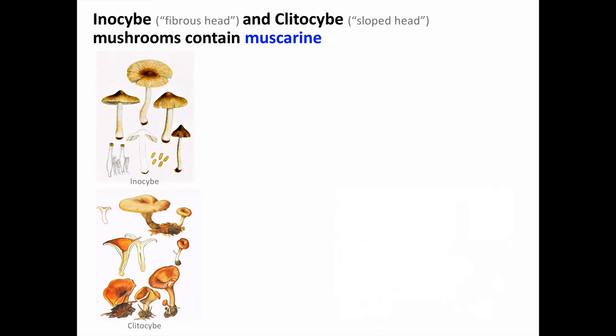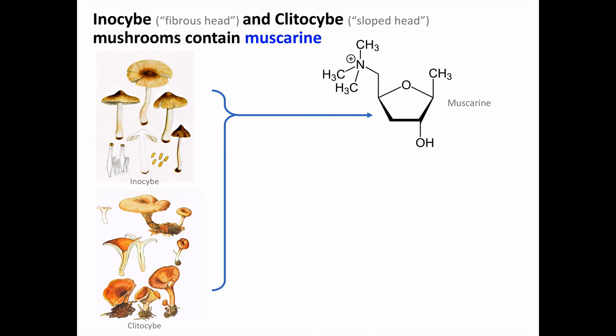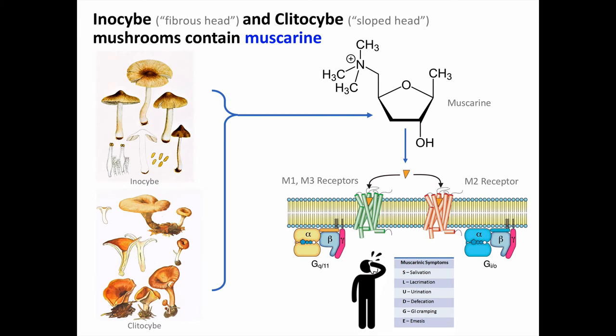The poison found in Inocybe and Clitocybe mushrooms is muscarine. Inocybe literally means 'fibrous head,' while Clitocybe means 'sloped head.' Muscarine is an agonist at muscarinic acetylcholine receptors. Overstimulation of M3 receptors causes sweating through action on the muscarinic portion of the sympathetic nervous system and SLUDGE syndrome from activation of parasympathetic end organs. Treatment would be aimed at decreasing secretions and sweating, and atropine or other anti-muscarinic drugs would have a very beneficial effect.